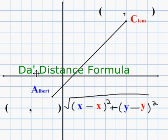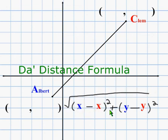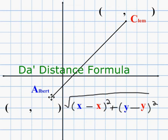In the distance formula, you take your x's over there, you're going to subtract them, you're going to square them, you're going to put your hangy thingy there — square root sign — you're going to add the same thing to the y's. You have the distance that it takes you from here to there.